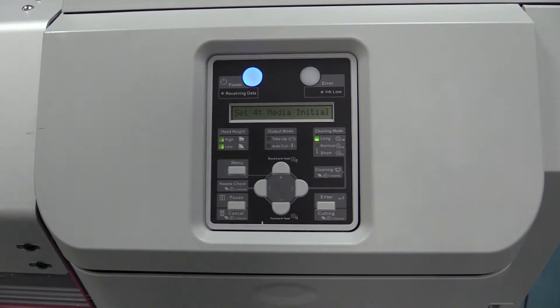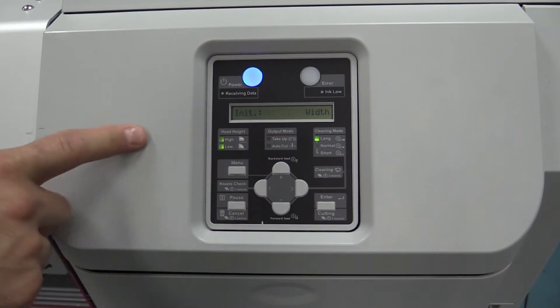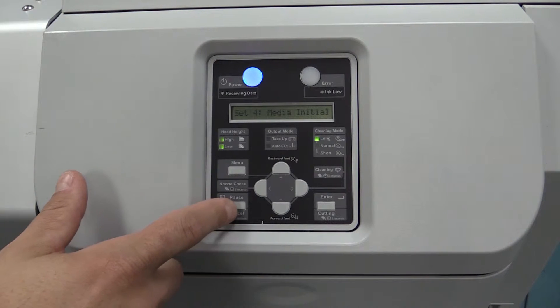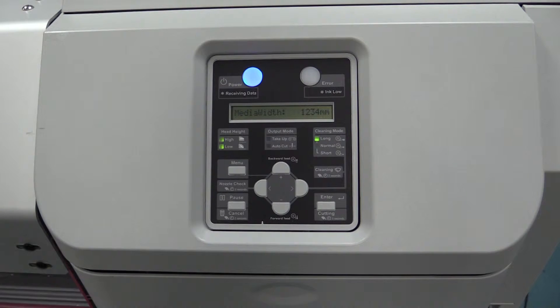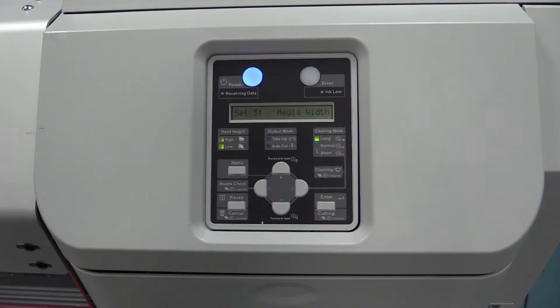Setting 4 is media initial, essentially telling it what to do when you first load a new roll. You can see it's set to width, or you can turn it to off. Just leave it set to width so it'll automatically sense what the width of the roll is and make it easy to plug into the software. Setting 5 is media width. If you turn off media initial, you can input your media width here manually. But I would just leave setting 4 to on so it does it automatically. It minimizes any error.